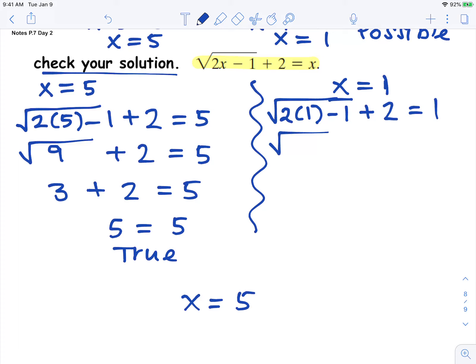Simplify. 2 times 1 is 2. Subtract 1 is 1. The square root of 1 is 1. 1 plus 2 is 3. Looking at that equation, it is not true. 3 cannot equal 1. So this answer is not a possible solution.